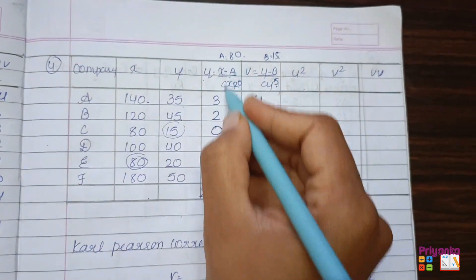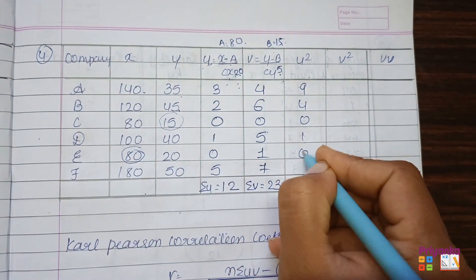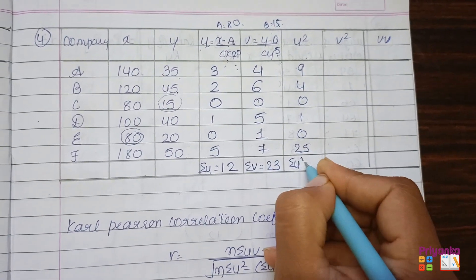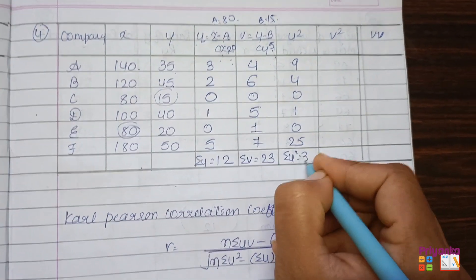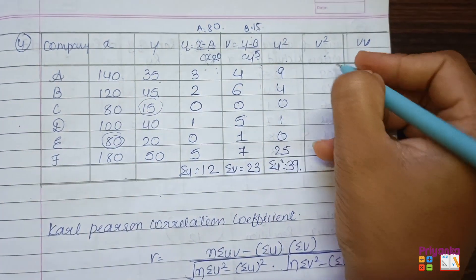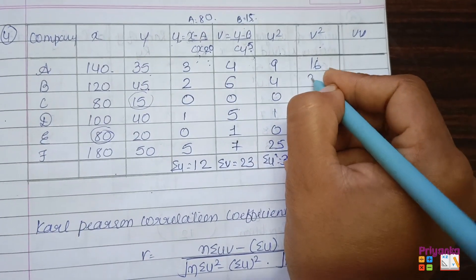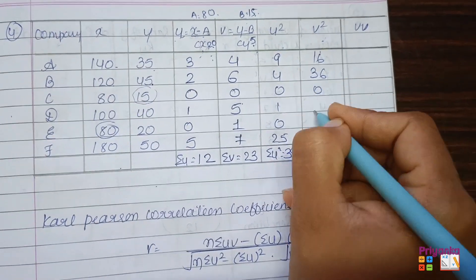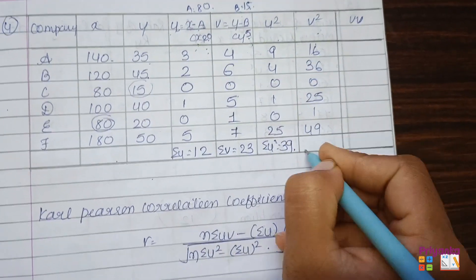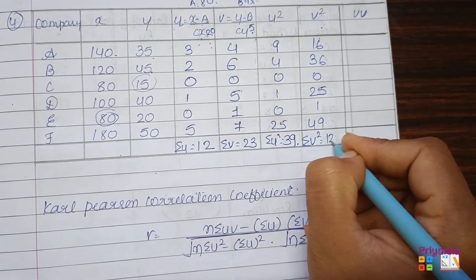U squared — that is, the square of the u column: 3 squared is 9, 2 squared is 4, 0, 1, 0, and 5 squared is 25. Sigma u squared is 39. V squared — the square of the v column: 16, 36, 0, 25, 1, 49. The total of sigma v squared is 127.